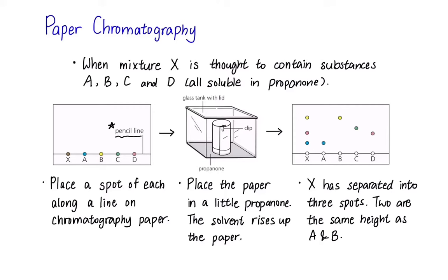We have another form of chromatography here where it is used to identify the substances present in a mixture. When mixture X is thought to contain substances A, B, C and D all soluble in propanone, we place a spot of each along a line of chromatography paper. Note that this line should be a pencil line so that it doesn't spread in propanone. The next step, we roll and place the paper in a glass tank containing a little propanone. The solvent will rise up the paper causing the spots to spread and travel upwards. After the solvent has reached the top, remove the paper and analyse it.